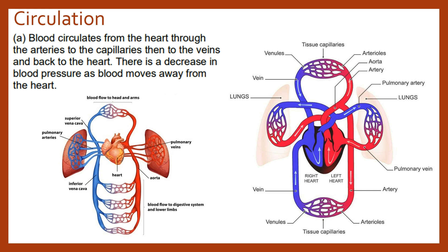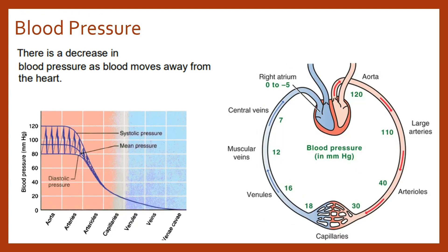From there, blood gets back to the lungs and back to the heart to be distributed around all of the body tissues again — so it's a cycle, constantly repeating itself. We also know that blood pressure is not consistent at all points of circulation; blood pressure will be at its highest as the blood leaves the heart via the aorta.